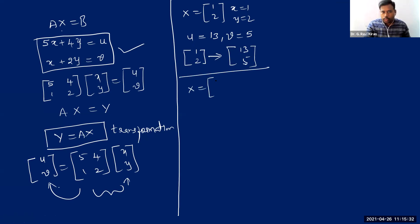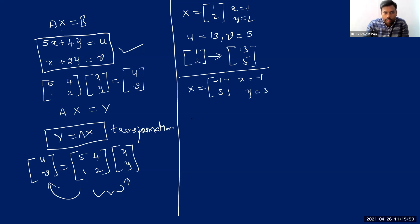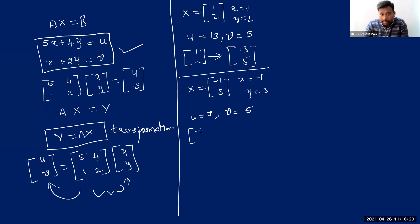If I take capital X equals (-1, 3) — meaning x equals -1 and y equals 3 — then under this transformation, u equals -5 plus 12 equals 7. And v equals -1 plus 6 equals 5. So the vector (-1, 3) is transformed to a new vector (7, 5).